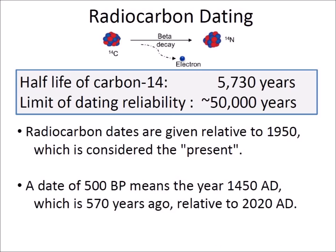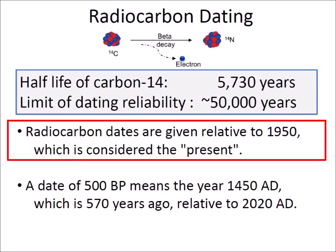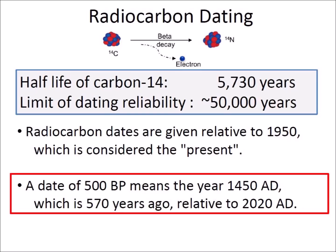Let us think about this statement. Radiocarbon dating can provide date ranges of up to 50,000 years. Radiocarbon dates are always given relative to 1950, which is considered the present. The convention to use 1950 as a reference date makes it possible to compare radiocarbon dates published in journals without having to adjust for the date of publication. A radiocarbon date of 500 years before the present means the year 1450 A.D., which is 570 years ago relative to 2020 A.D.